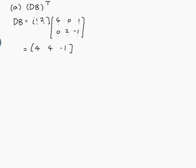DB transpose would be the transpose of that matrix. So when you transpose a matrix, you turn all of the rows into columns, so that would become 4, 4, minus 1. So that's my answer for DB transpose.